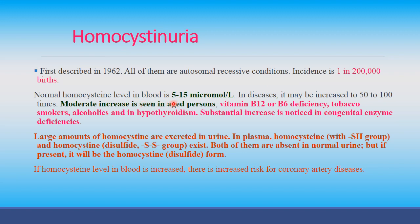Normal homocysteine level in blood is 5 to 15 micromoles per liter, which may be increased 50 to 100 times. Moderate increases are seen in aged persons, vitamin B12 and B6 deficiency, tobacco smokers, alcoholics, and hypothyroidism. Substantial increases are noticed in congenital enzyme deficiencies. Large amounts of homocysteine are excreted in urine. Homocysteine in plasma is absent in normal urine, but if present it exists in the homocysteine form.